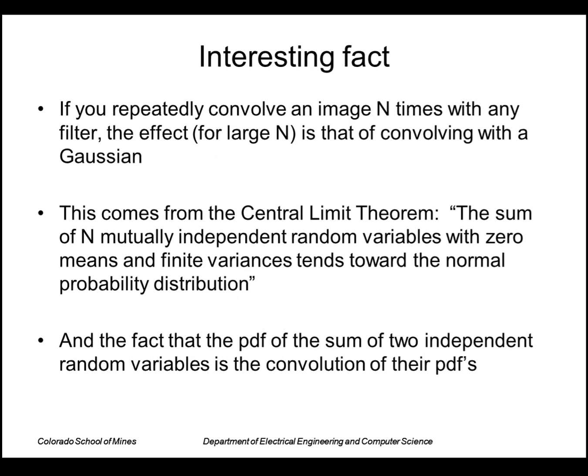One other interesting thing is that if you repeatedly convolve an image with any filter, the effect is that of convolving with a Gaussian. And this comes from the central limit theorem, which says that the sum of n mutually independent random variables with zero means and finite variances tends toward the normal probability distribution. And also that the pdf, the probability density function, of the sum of two independent random variables is the convolution of their pdfs.